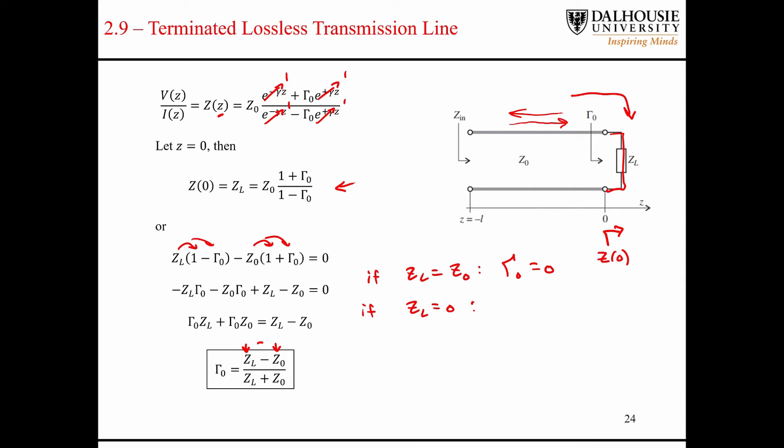You can kind of see how that manifests itself here in this equation for the reflection coefficient. If you set ZL equal to zero, then the reflection coefficient is going to equal negative one. So this is a short. So this is a perfect match. This is a short.